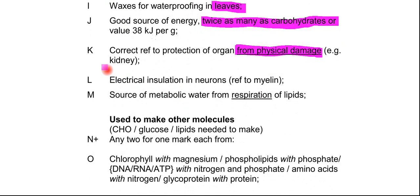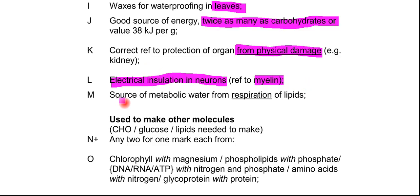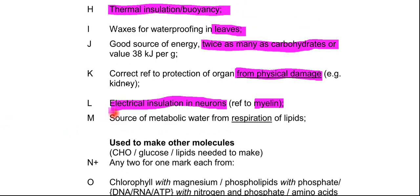The next marking point is electrical insulation in neurons — you could mention the myelin sheath. There is also a source of metabolic water from the respiration of lipids, so when you use lipids in respiration, you produce water. I want to highlight that marking points H and L require you to clarify what type of insulation you mean — there are two types: thermal and electrical insulation.